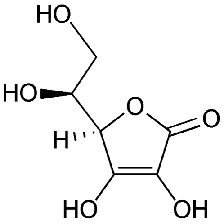Substances that have the ability to reduce other substances — causing them to gain electrons — are said to be reductive or reducing and are known as reducing agents, reductants, or reducers. The reductant transfers electrons to another substance, and is thus itself oxidized. And, because it donates electrons, the reducing agent is also called an electron donor. Electron donors can also form charge transfer complexes with electron acceptors.